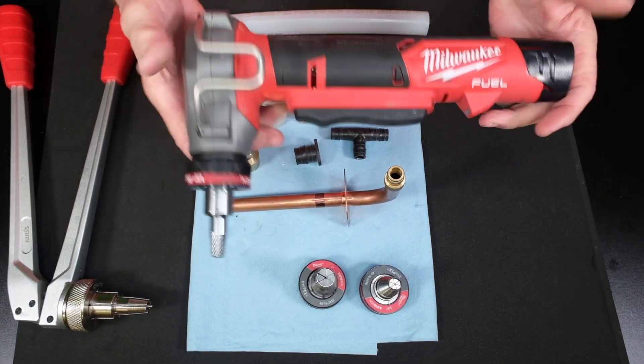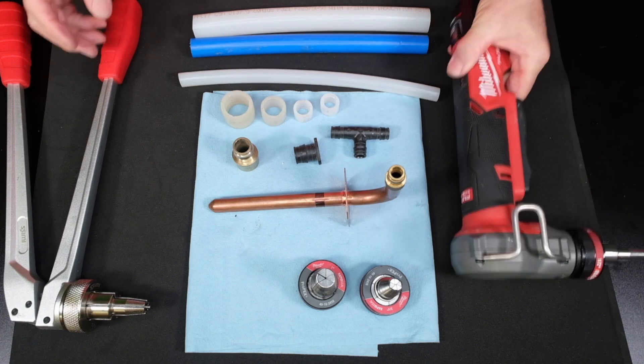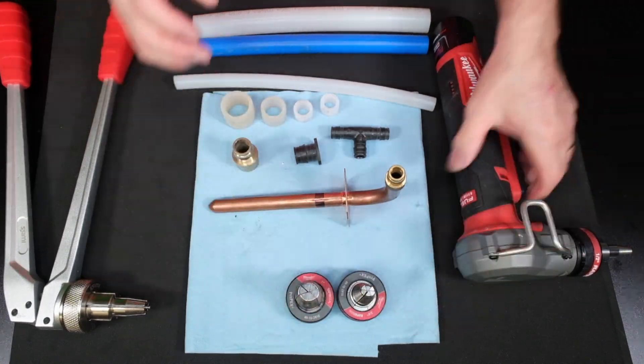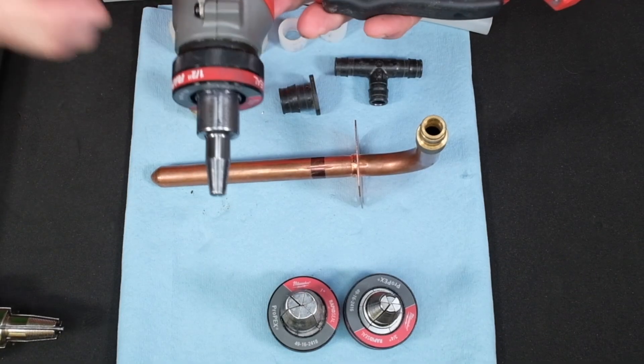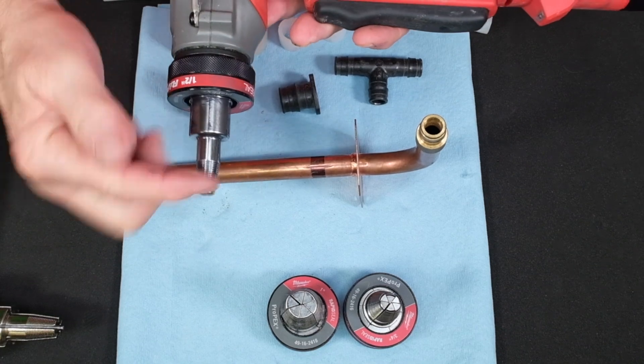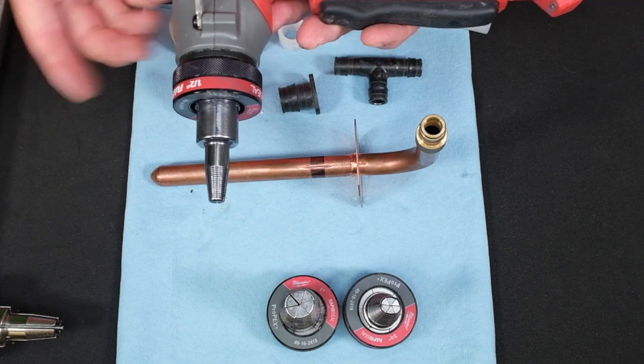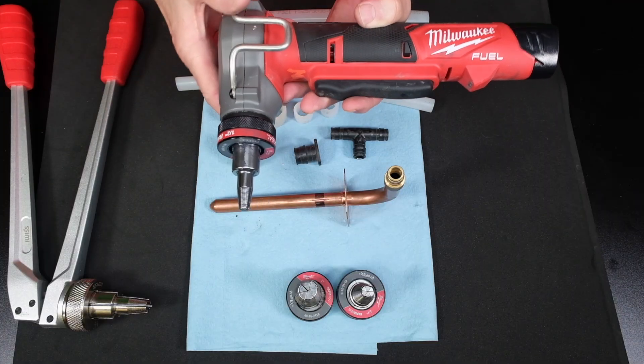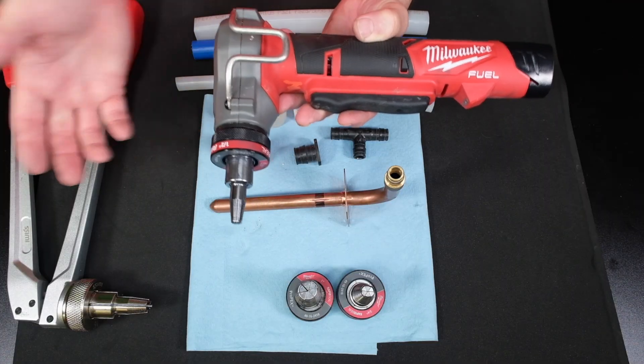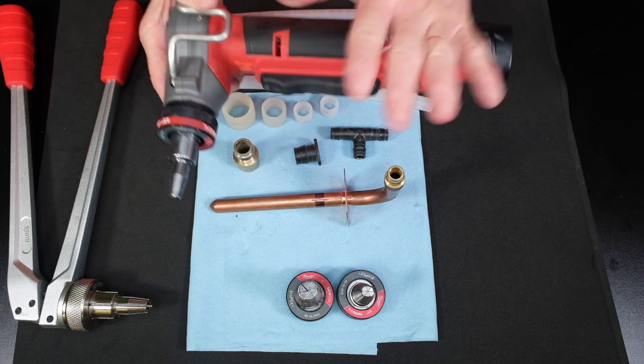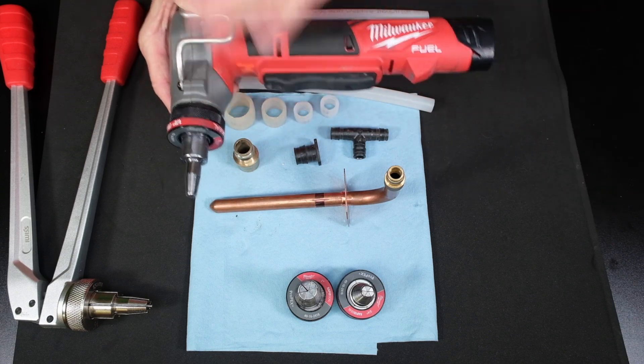We're going to be using the Milwaukee expanding tool today. Now, as you can see, this particular expanding tool will use the half inch head, the three-quarter inch head, and the one inch head. Then they make another tool for going larger. Upanor goes on up to two inch, maybe even larger than that, but we don't ever use anything larger than that. Our general piping is going to be somewhere between half and one inch.